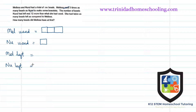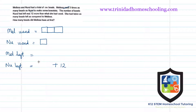The number of beads Neural had left was 12 more than what she had used. So this is what Neural used, and what she had left is 12 more than what she used — that one little amount plus 12 more.